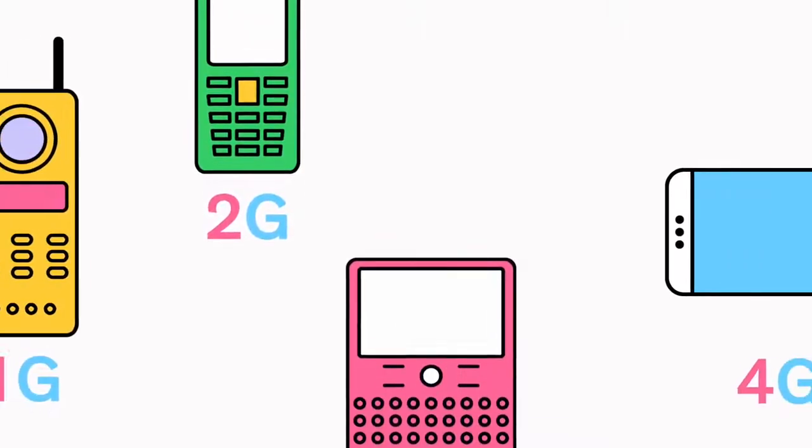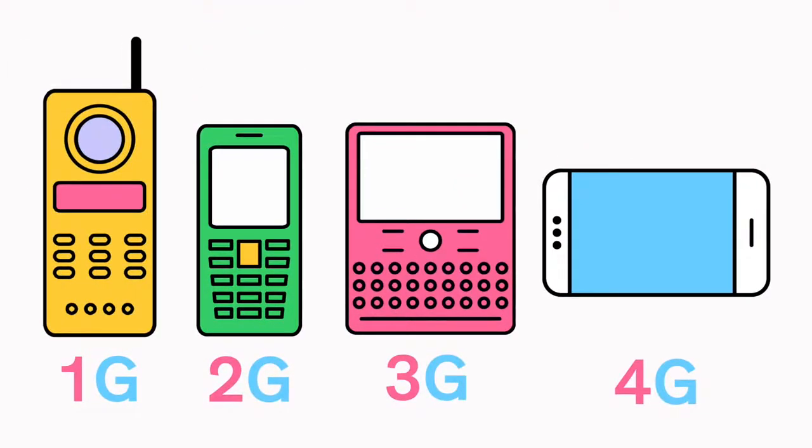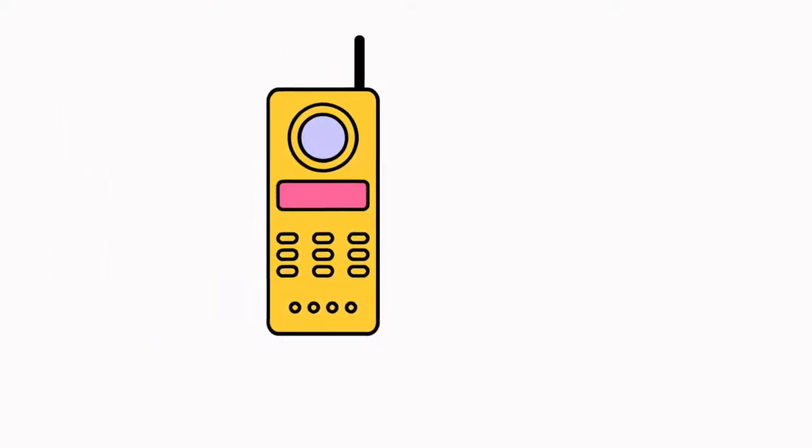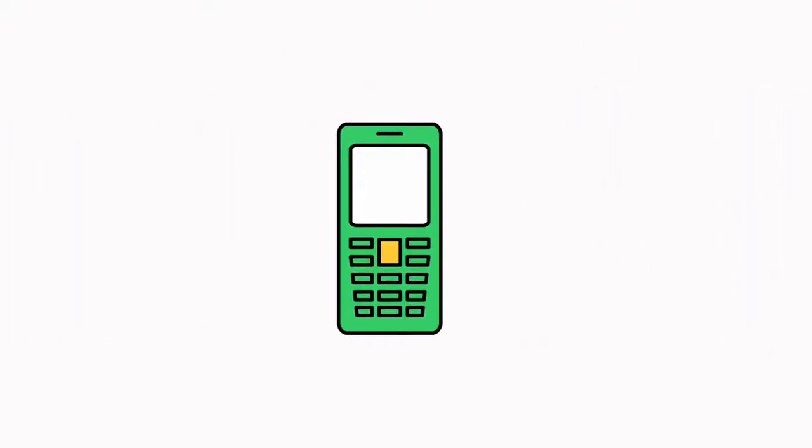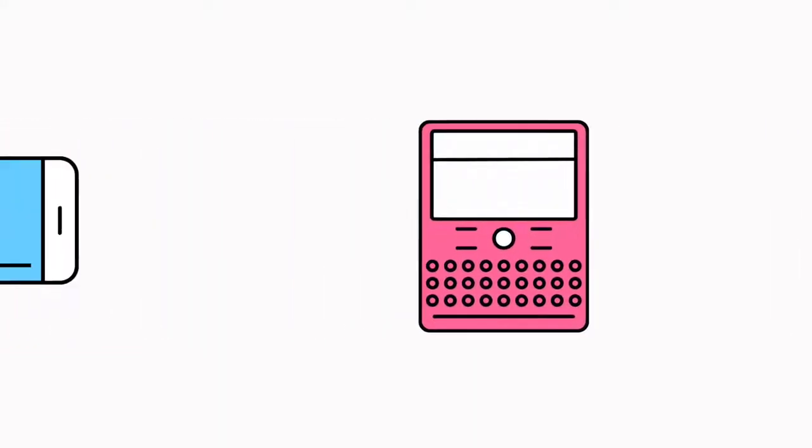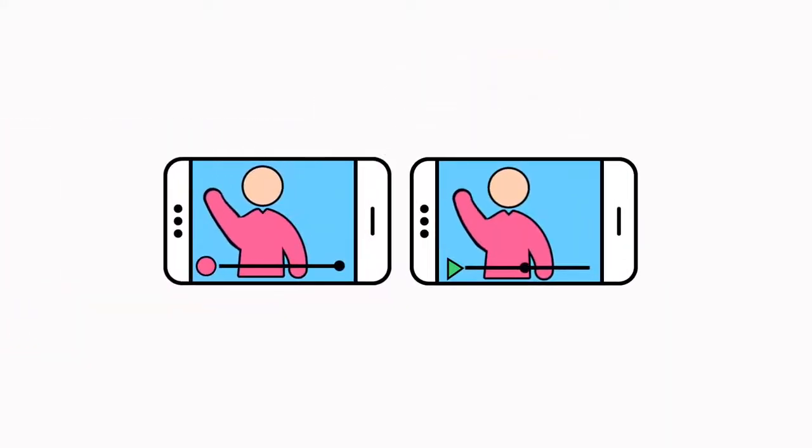Every new generation of wireless networks delivers faster speeds and more functionality to our smartphones. 1G brought us the very first cell phones, 2G let us text for the first time, 3G brought us online, and 4G delivered the speeds that we enjoy today.